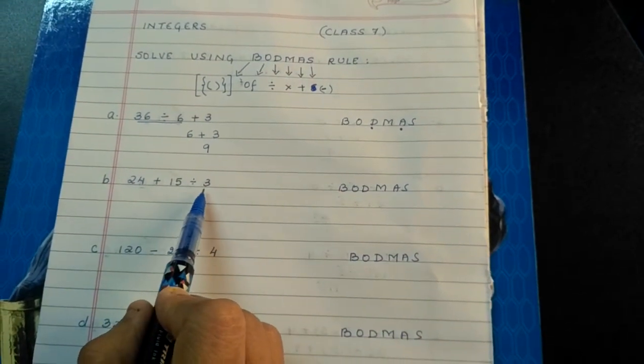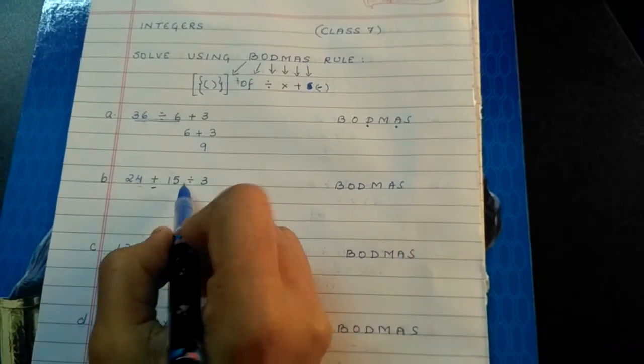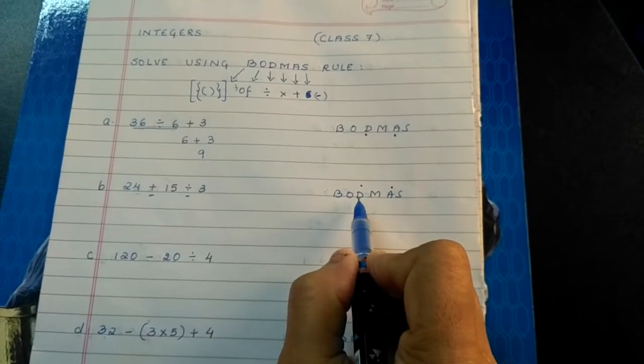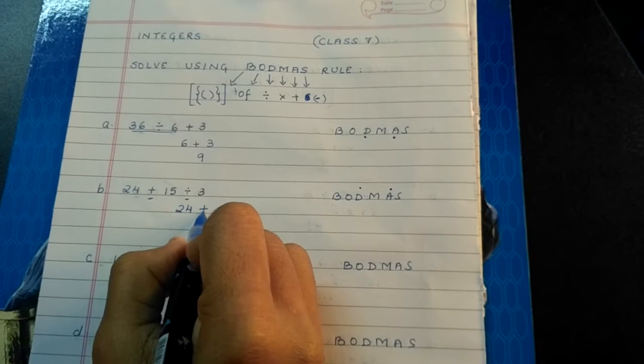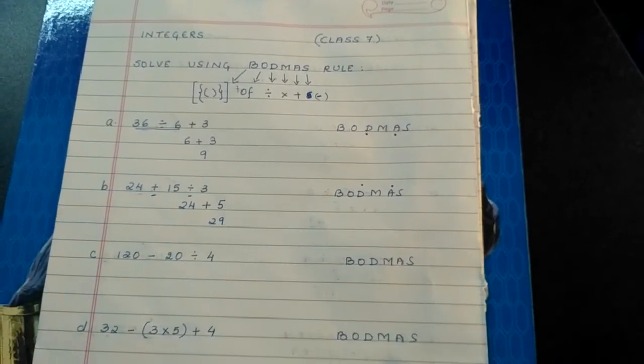24 plus 15 divided by 3. Now what is the arithmetic operation involved here? Addition and division. But what comes in BODMAS first? D for division. So 24 plus 15 divided by 3 is 5. So 24 plus 5 is 29.